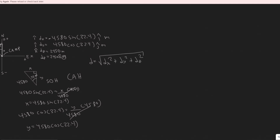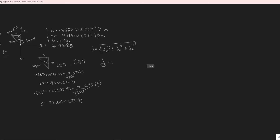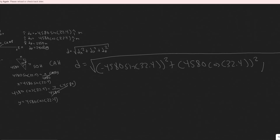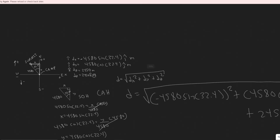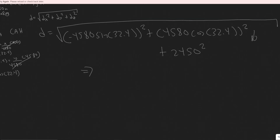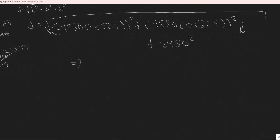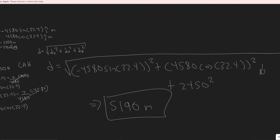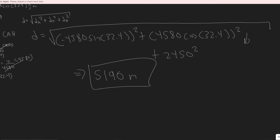All we need to do is plug in the values. D equals the square root of (negative 4,580 sine of 32.4)² plus (4,580 cosine of 32.4)² plus (2,450)². You can simplify the components from trig form first if you want. When you compute this, you get approximately 5,190 meters. That's your magnitude.